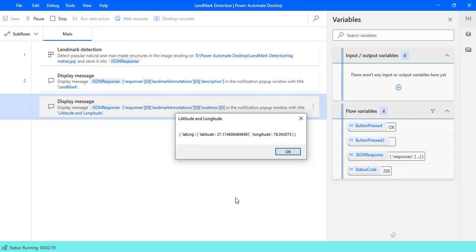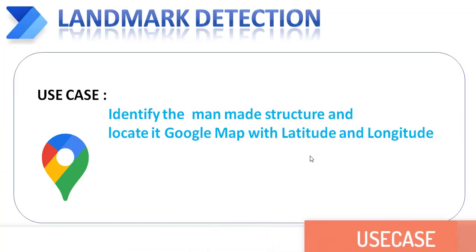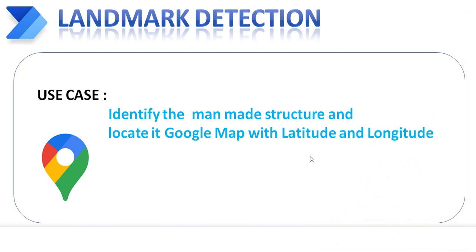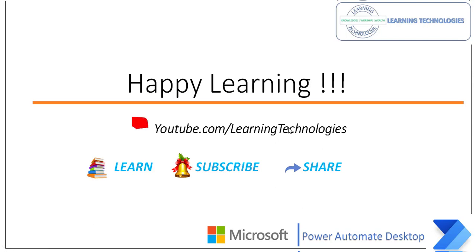This is how we detect landmarks using images with Cloud Vision API and the Landmark Detection Action. I hope you understand how to work with Landmark Detection Action as part of this tutorial. In the next tutorial, we will work on a small project on Landmark Detection — providing an image of a man-made structure as input, locating it on Google Maps using latitude and longitude, and creating a flow that automatically identifies the location using desktop flows. Thank you for watching. If you have any queries, please post them in the comments. See you in the next session. Bye bye, have a wonderful day.